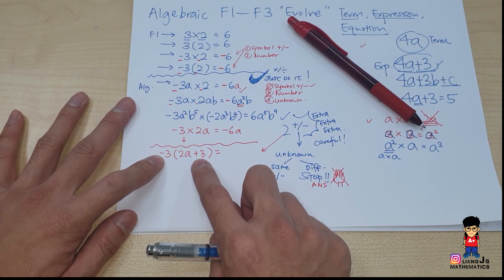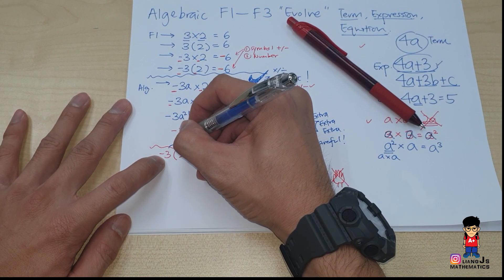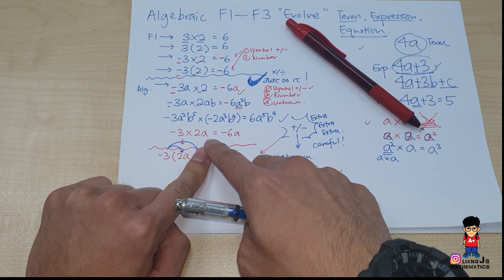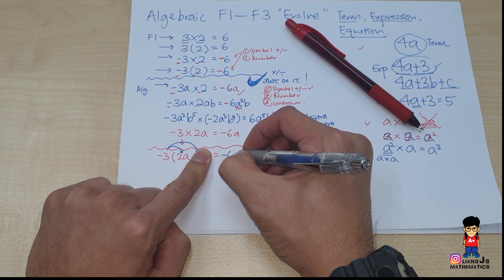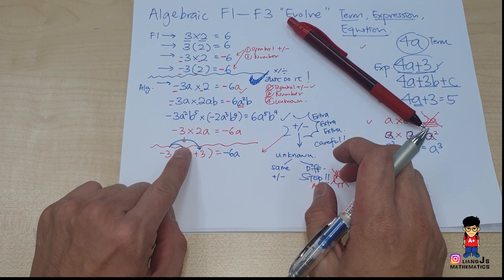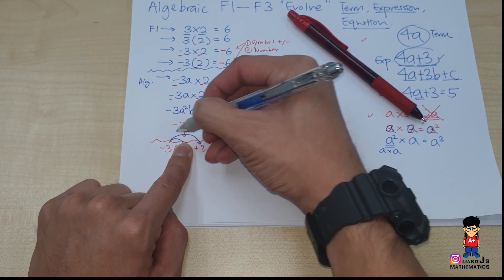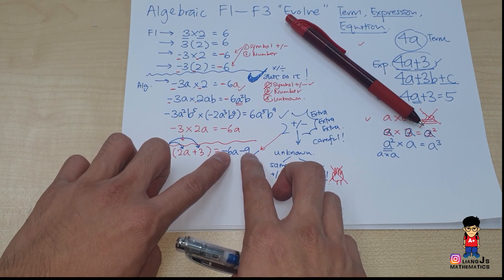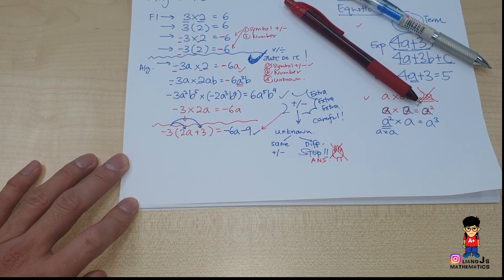Now cover up the first term and do the second multiplication. Minus times plus gives minus, 3 times 3 gives 9 — so you get minus 9. Your full answer is minus 6a minus 9. Check: minus 6a and minus 9 — different unknowns, so stop; that is your final answer.